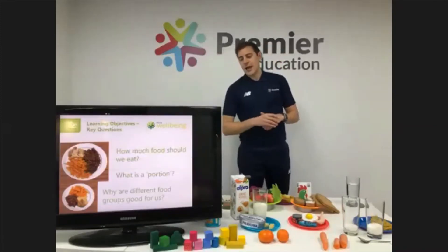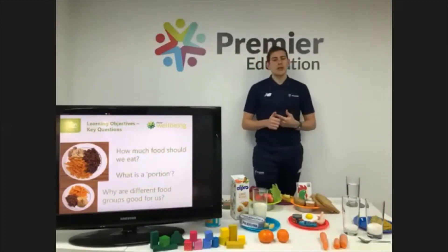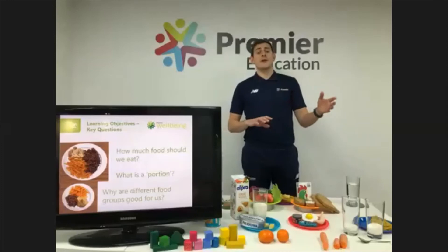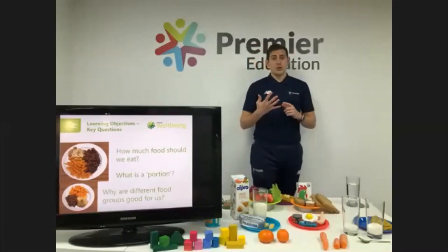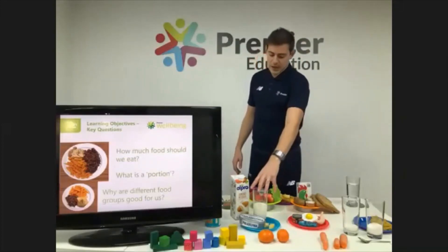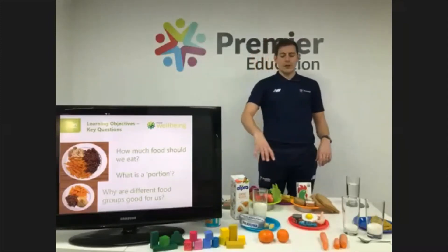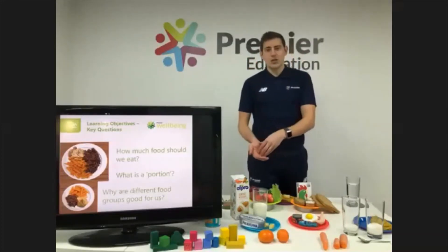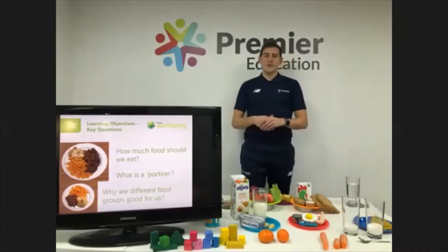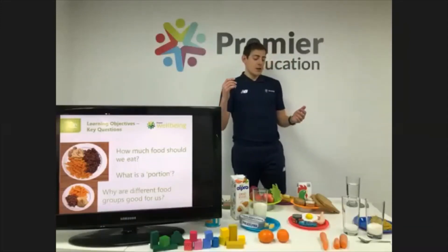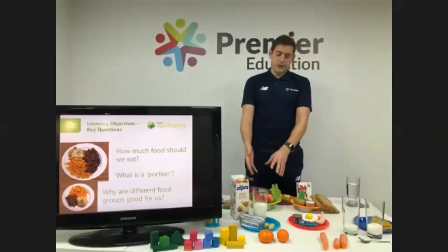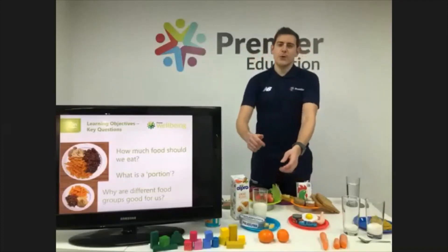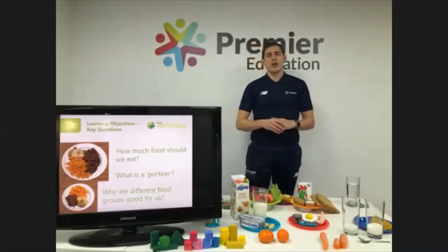Let's recap. How much food should we eat? At least five portions of fruits and vegetables - you can get more, especially vegetables. Five portions of starchy carbohydrates. Two to three portions of dairy. And two to three portions of protein. What is a portion? We measure it using our hand - our hands change as we grow and get bigger as our bodies need more food and energy. Why are the different food groups good for us? Fruits and vegetables give us vitamins and minerals, starchy carbohydrates give us energy, proteins help us grow and repair, and dairy products give us calcium for our bones and teeth.